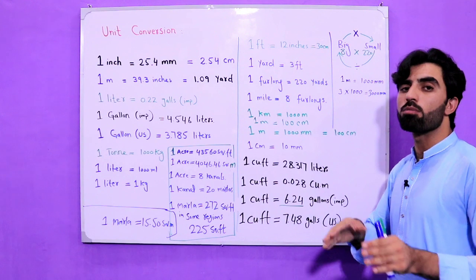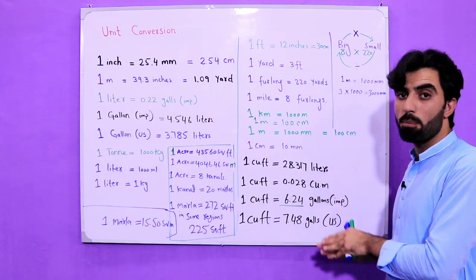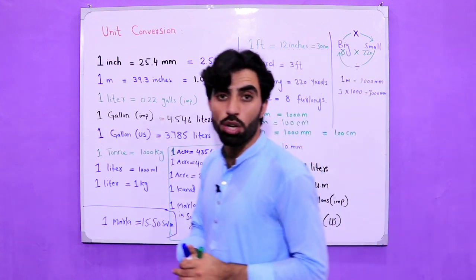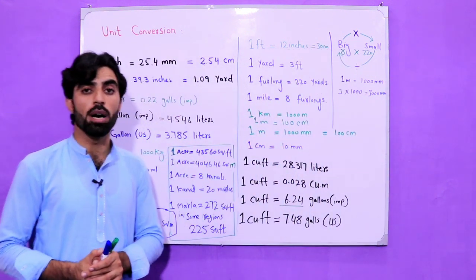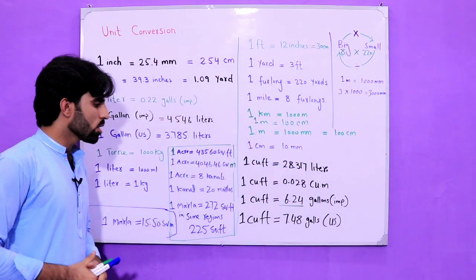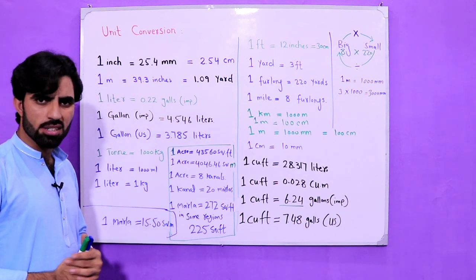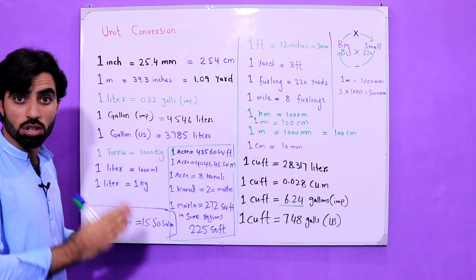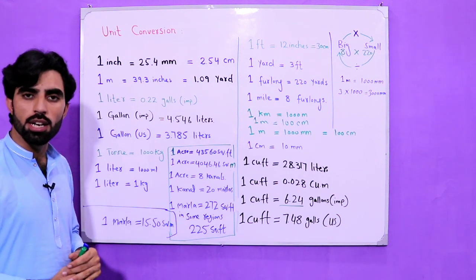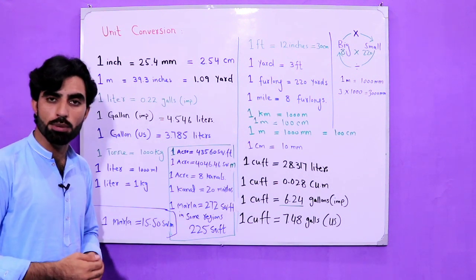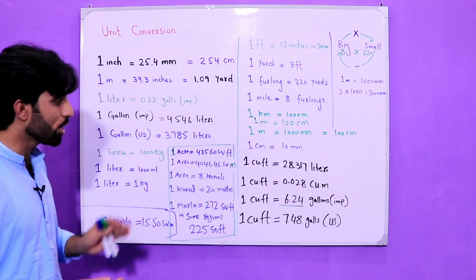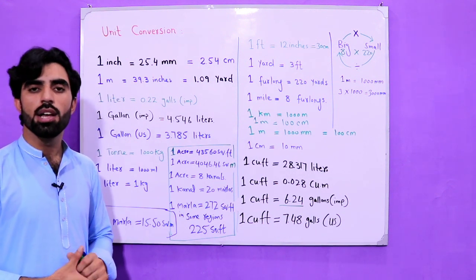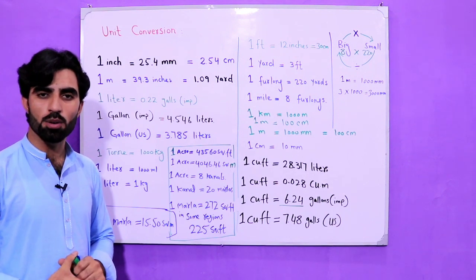One marla equals 15.50 square meters. The important thing is this method — from small to big, divide; from big to small, multiply — which you can apply for all unit conversions. Unit conversion is very useful to know, and you should learn these values as they will help you in any civil engineering project. If you have any questions, comment below. Thanks for watching, see you in the next video, goodbye.